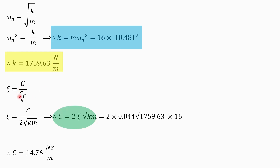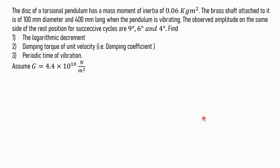Zeta equals c upon cc, where cc is the critical damping coefficient. So c equals 2 times zeta times the square root of k times m. That is 2 times 0.044 multiplied by the square root of k times m. The value of c comes out to be 14.76 N·s per meter.